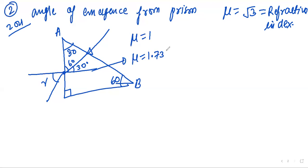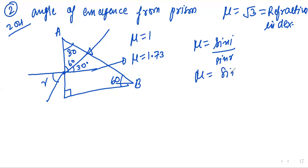Using Snell's law: mu = sin i / sin r. The incident angle is 30°. So we write: √3 = sin 30° / sin r, and we solve for the value of r.